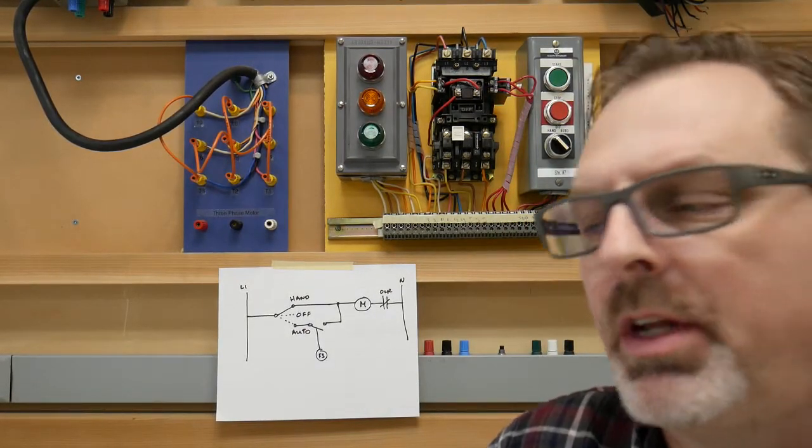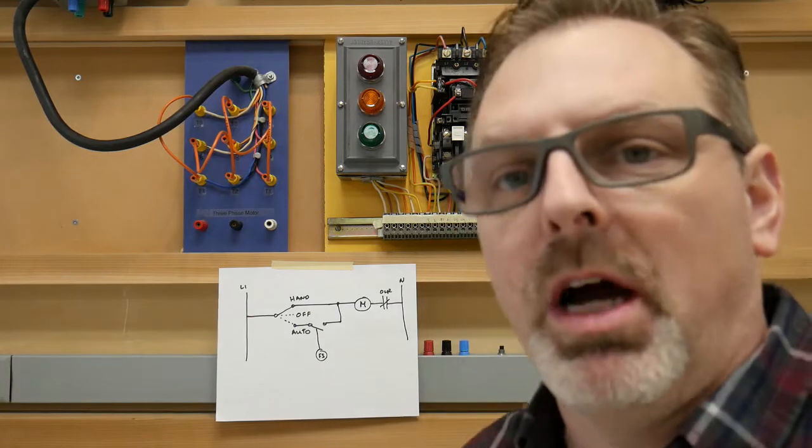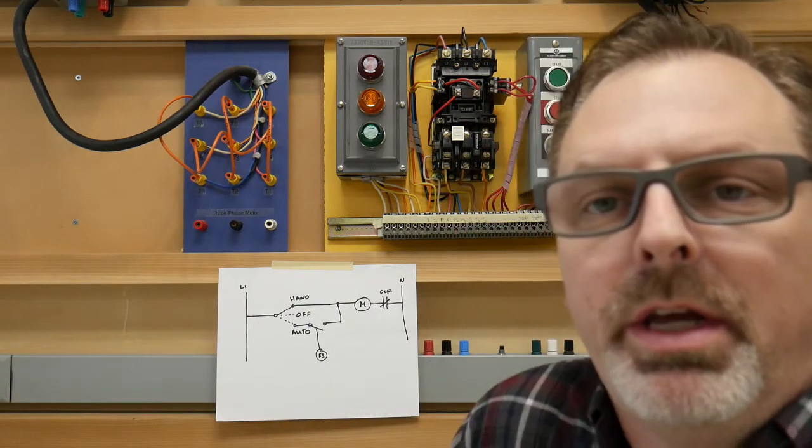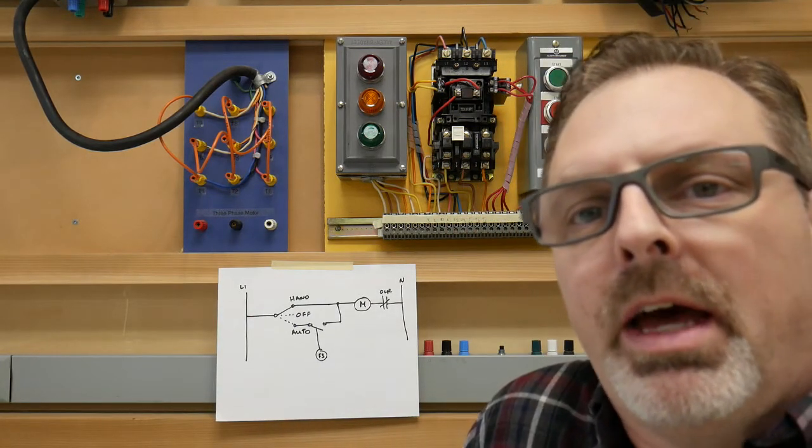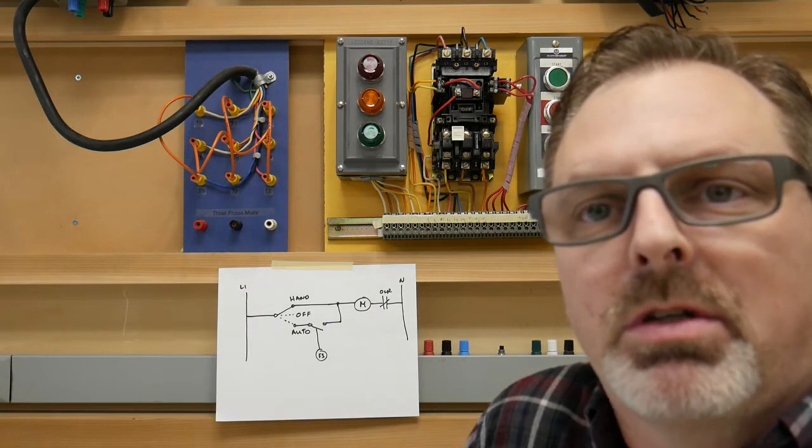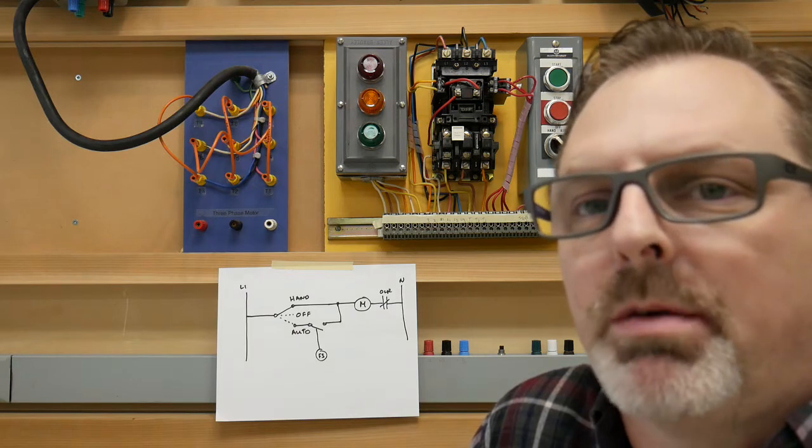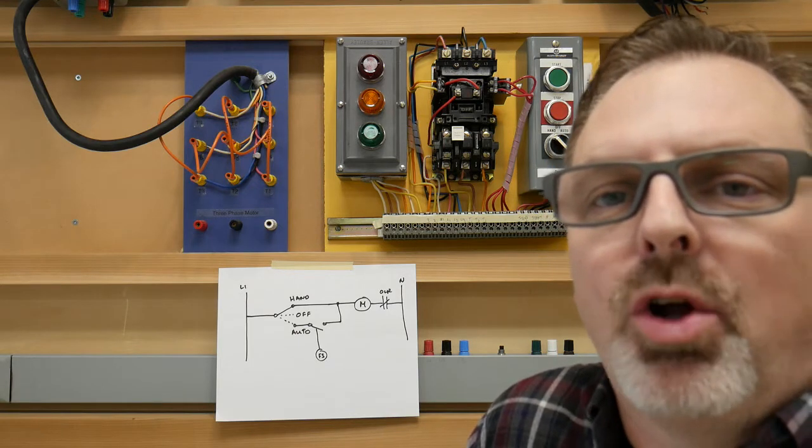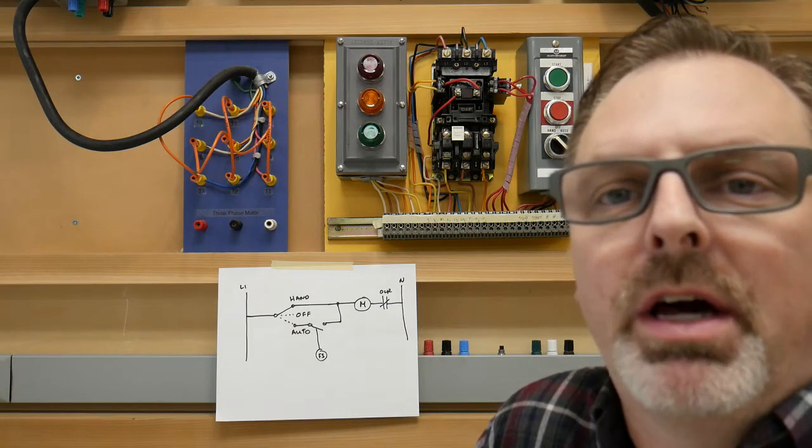The circuit I have drawn in this video, you can see behind me here on that piece of paper there, it is the hand-off auto float switch circuit that you see in your textbooks. Typically that is if we wanted a pump to be running in an automatic state in case we were to leave it unattended, maybe to prevent a tank from overflowing.